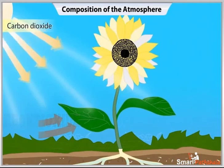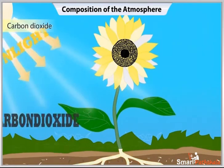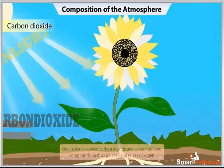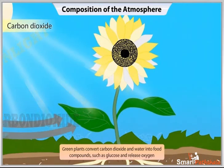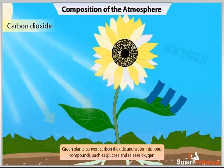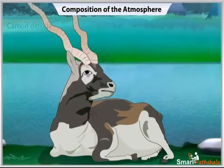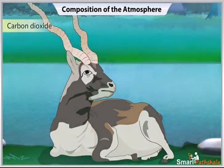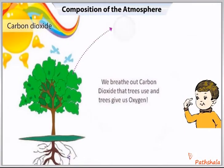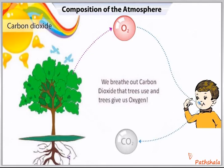Carbon Dioxide is another important gas. Green plants convert carbon dioxide and water into food compounds such as glucose and release oxygen. Humans and animals release carbon dioxide. The amount of carbon dioxide released by humans or animals seems to be equal to the amount used by the plants, which makes a perfect balance.